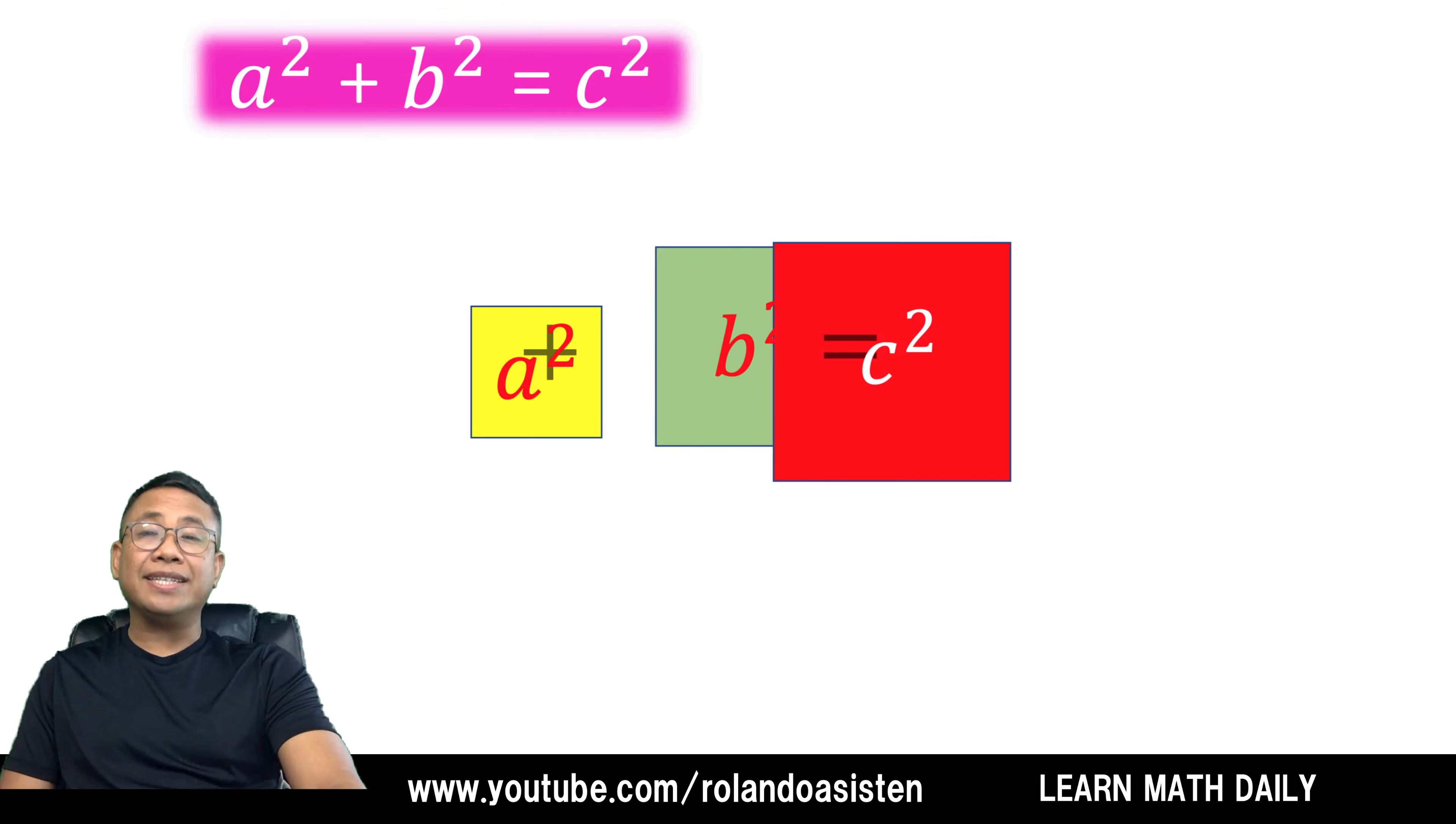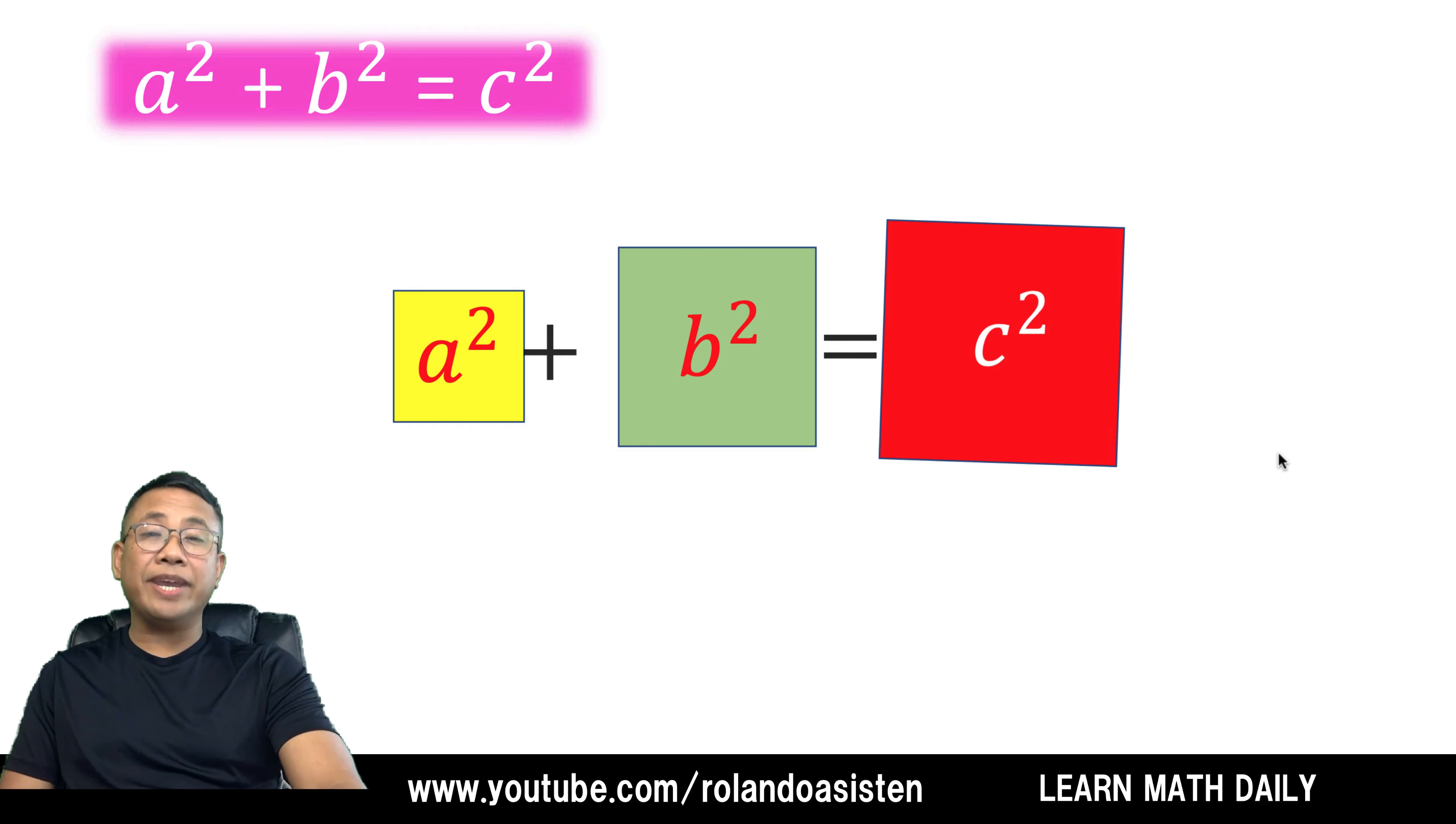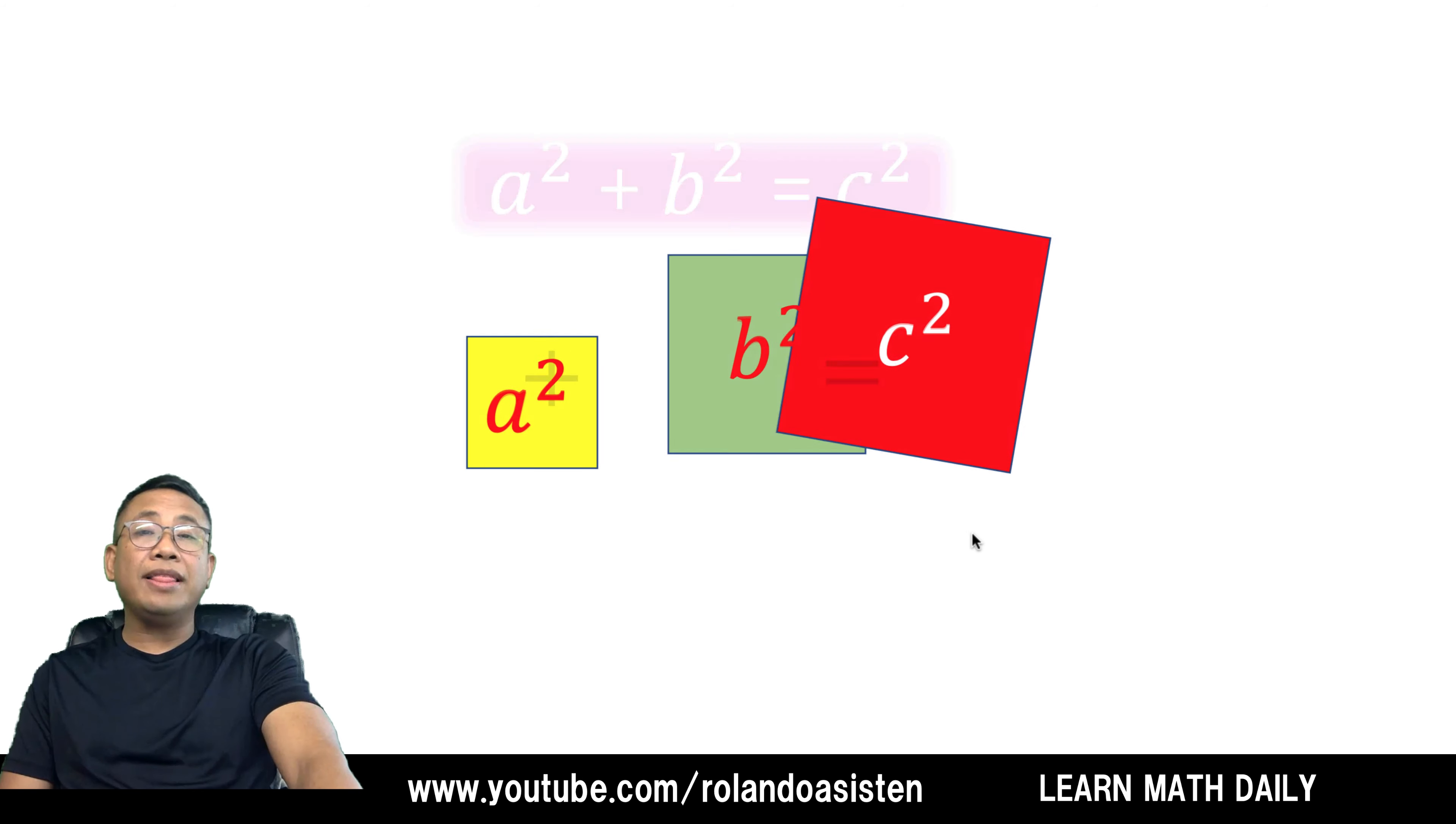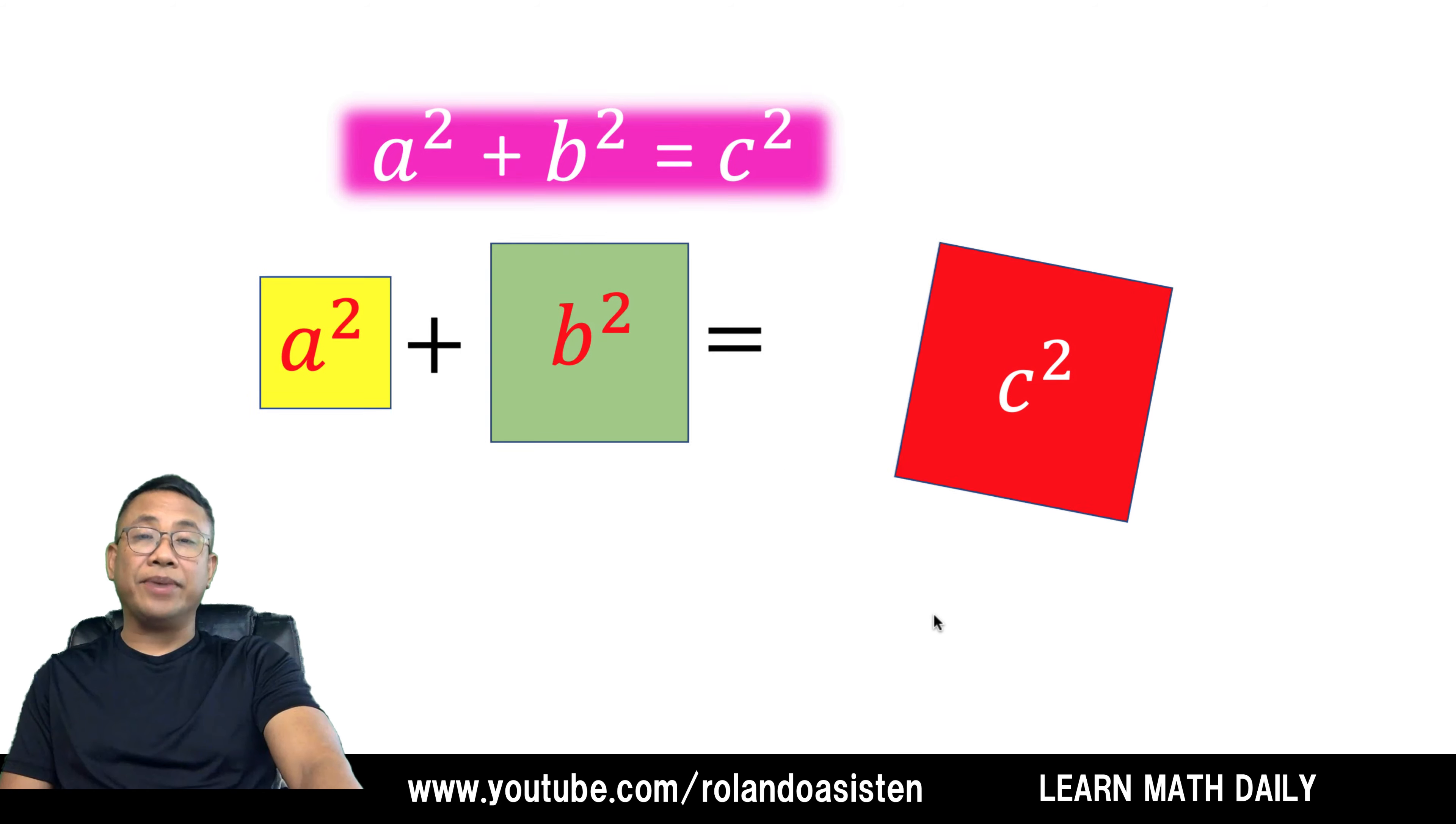Algebraically, it looks like this. A squared plus B squared equals C squared. And so when you have a right triangle, the sum of the squares A squared and B squared is equal to the square of the longest side, which is our hypotenuse, C squared. And that is now the visual derivation why A squared plus B squared is equal to C squared.